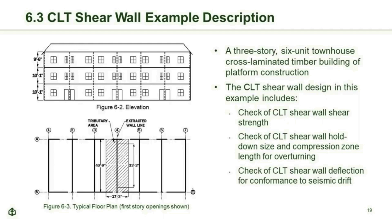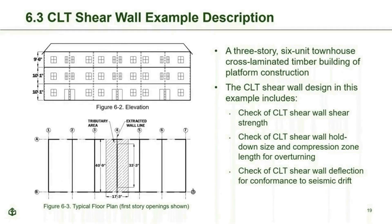Phil continues with the example, which focuses on the shear wall along Line 4, part of the seismic force-resisting system for a three-story, six-unit townhouse structure. The shear wall length is 33 feet 3 inches. For this example, roof trusses span north to south and floor panels span west to east.